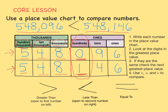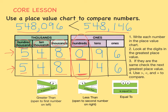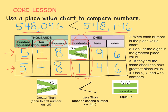548,096 is less than 548,146. One trick to help you remember which symbol to use is to think of the greater than and less than signs as extremely hungry alligators that want to eat the biggest number. We used the place value chart to figure out which number was bigger, and in this case it was the number on the right. So our alligator is going to face the number on the right.